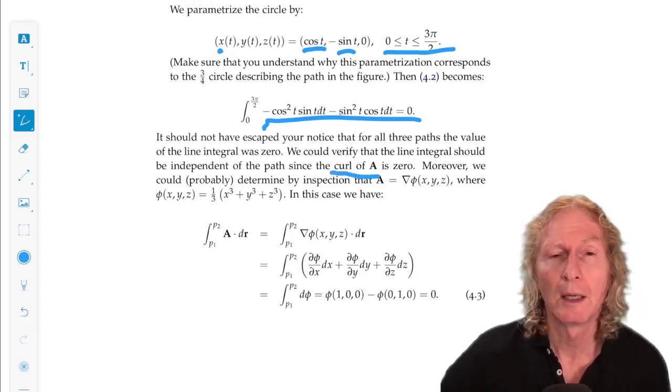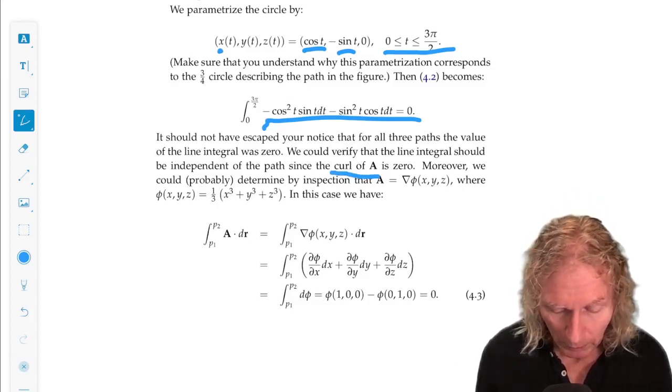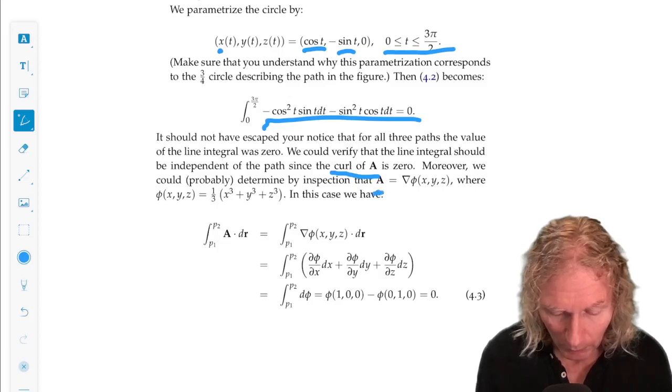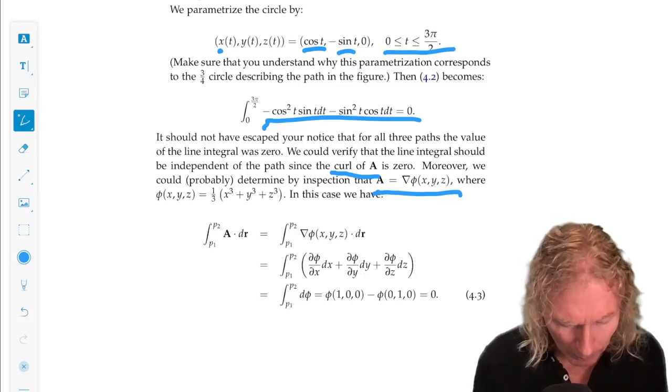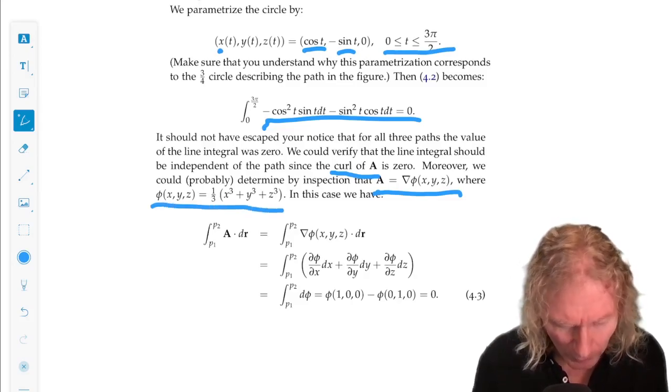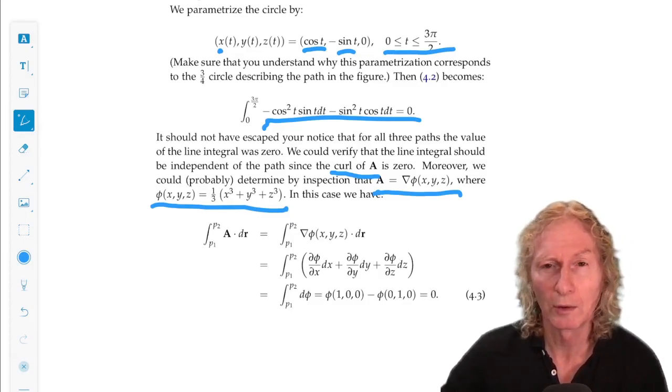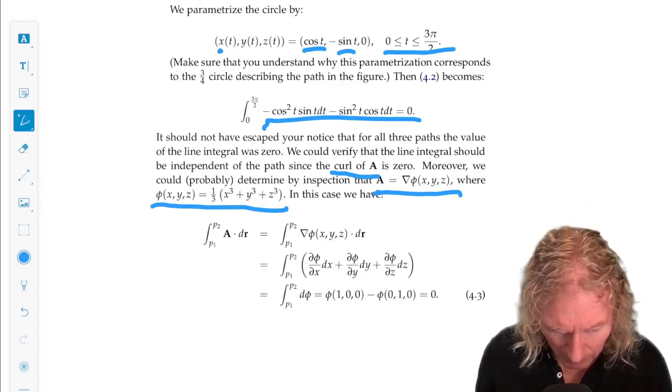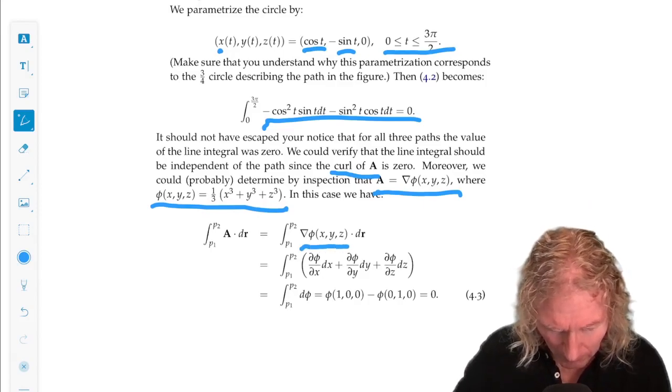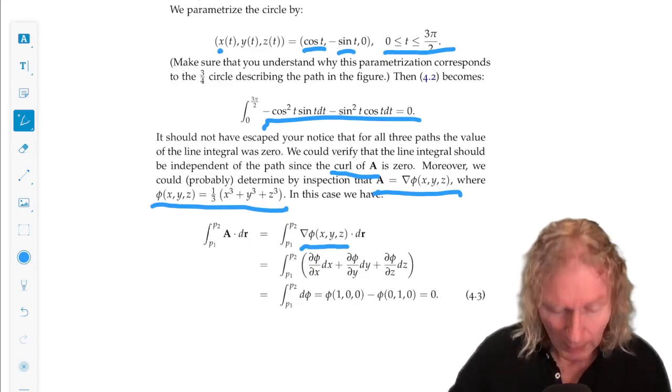We could check this very easily just by computing the curl of the vector field and showing that that's 0. But, you can also see almost by inspection that the vector field is given by the gradient of this scalar valued function. Now, you need to remember what the definition of gradient is. It's the vector of partial derivatives.